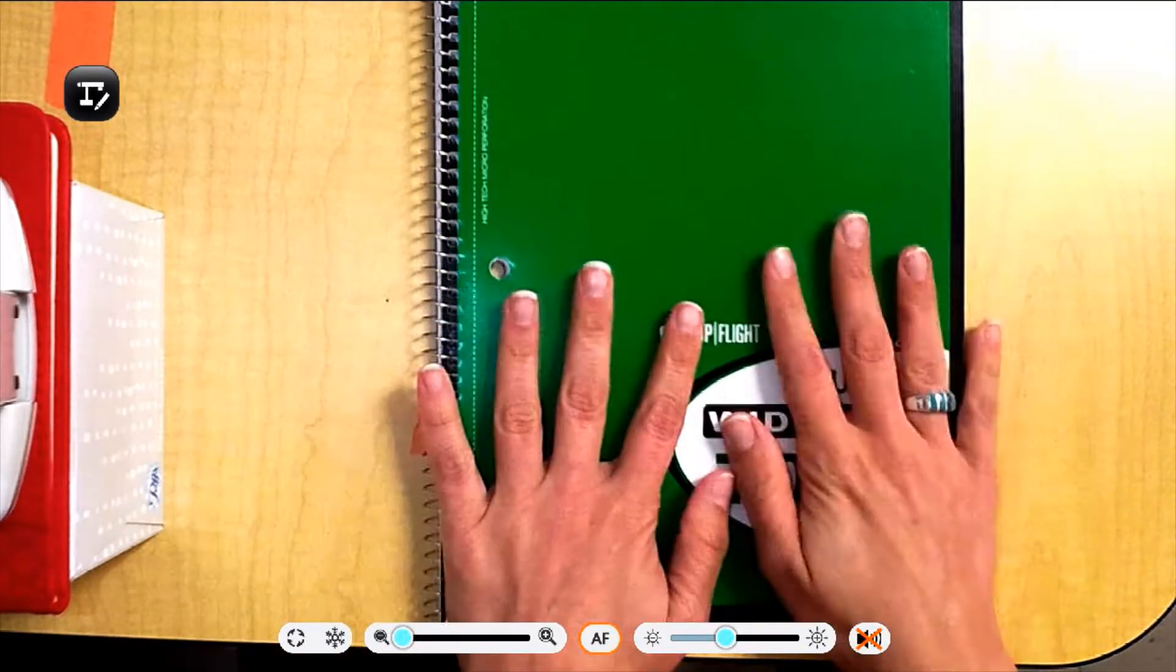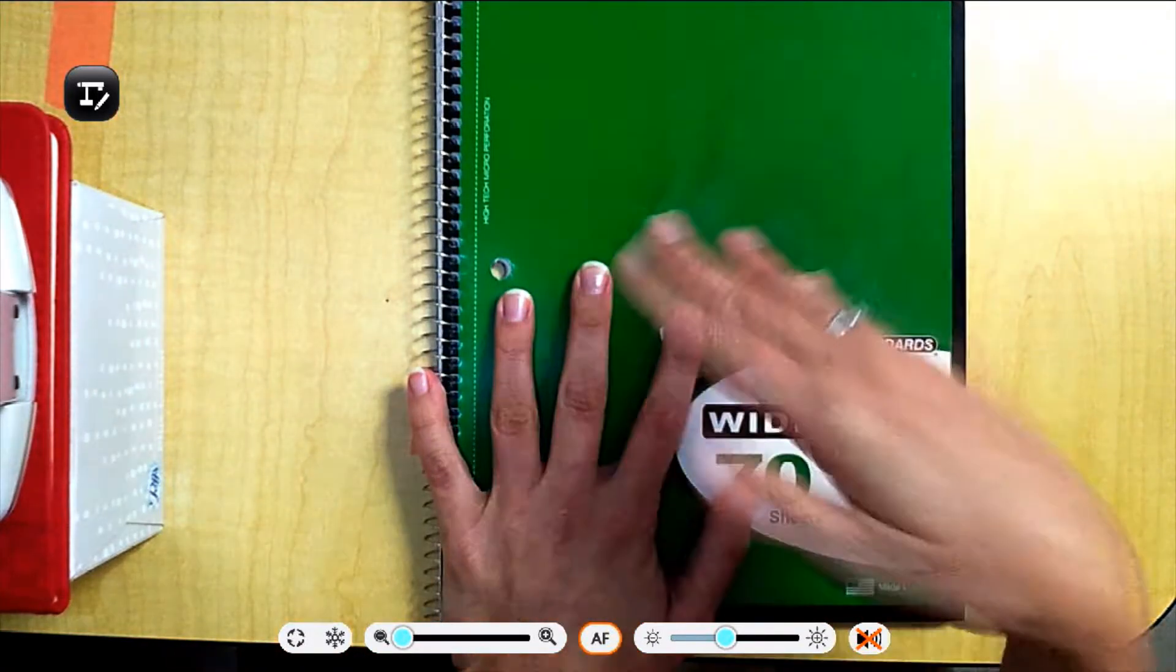Okay, so you're going to take out the green notebook that you received. The green one is for science, like life science.